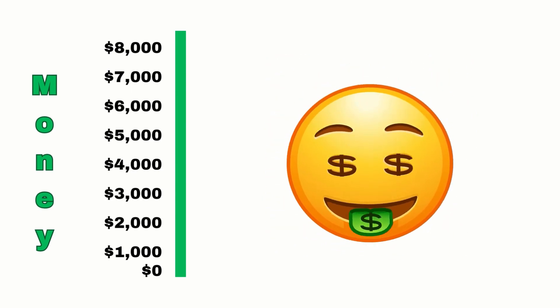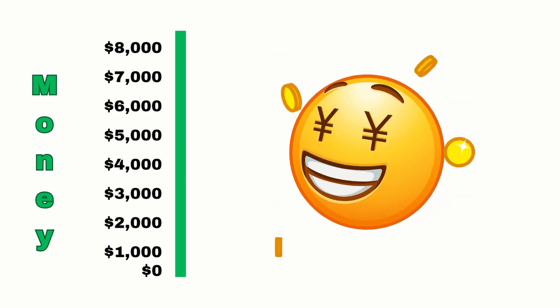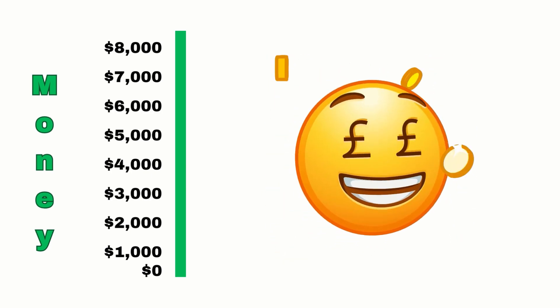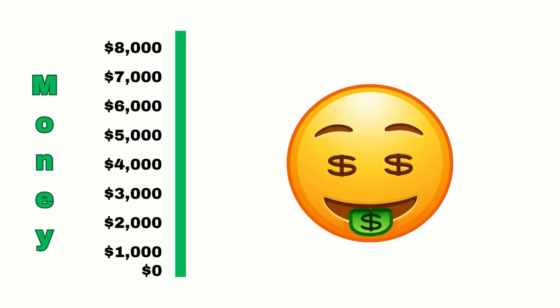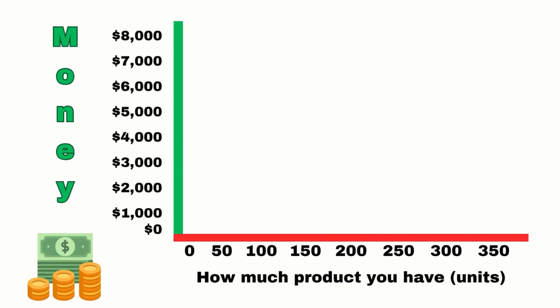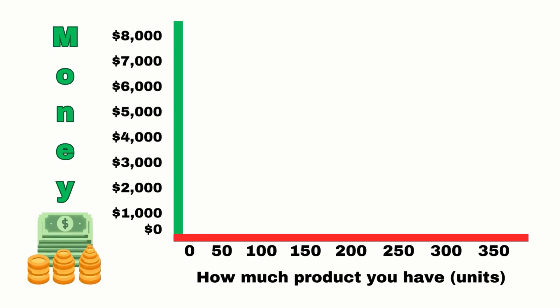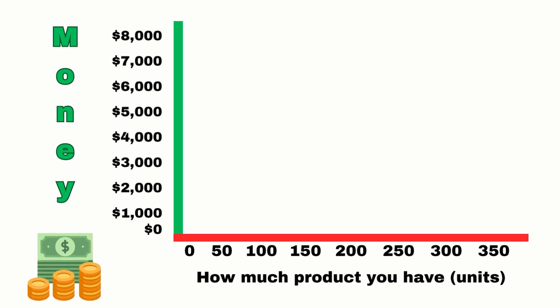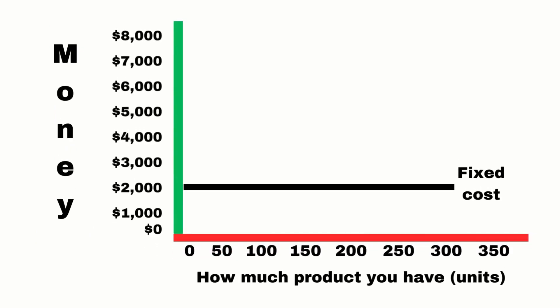The first line is that green line — that's your money line, showing for the most part how much money you've spent. The next line, the red line, is going to show you how much product you have, also known as units — in other words, how many items you have ready to sell. So far we've got your money line and your product line.